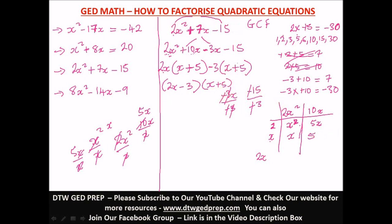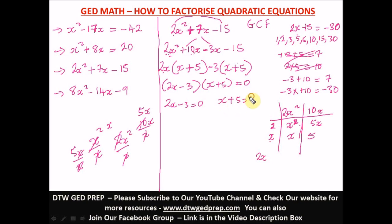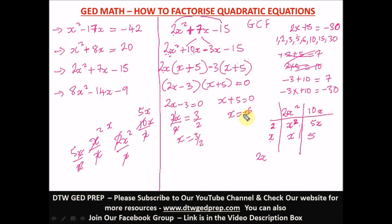If you're not told to solve for x, those brackets are your answer. But if you're asked to solve for x, equate each factor to zero. 2x minus 3 equals 0 gives x equals 3 over 2, which is one and a half. And x plus 5 equals 0 gives x equals negative 5.